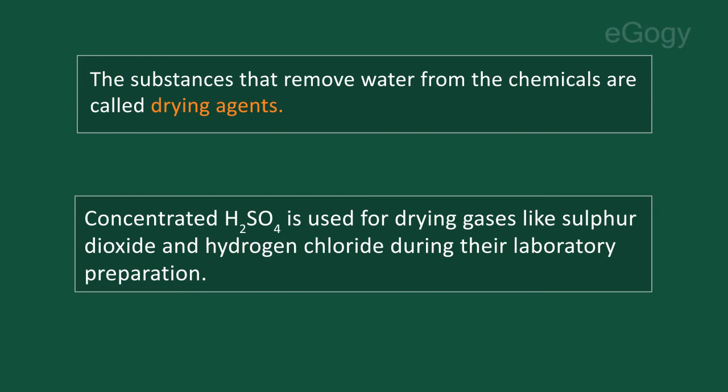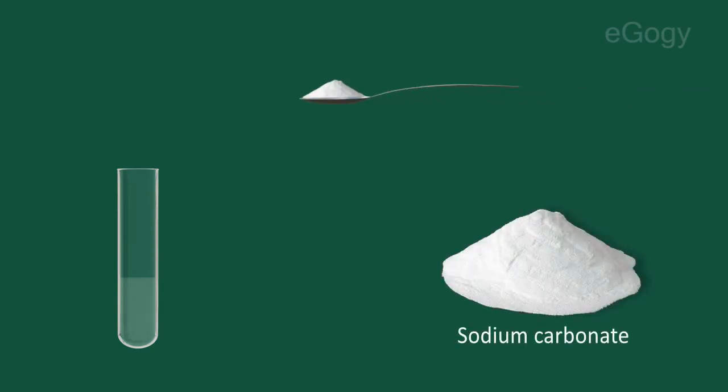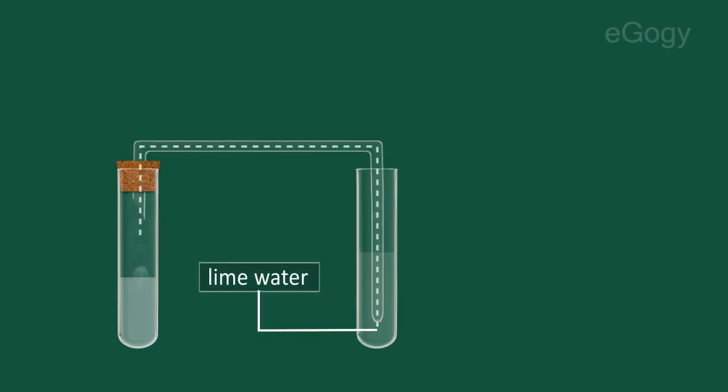Let us see the reaction of sulfuric acid with salts. Take some dilute sulfuric acid in a test tube, add a little sodium carbonate to it. We can see that the sulfuric acid combines with carbonate salts and forms carbon dioxide gas. Pass the gas produced through clear lime water taken in another test tube. Carbon dioxide passed into lime water gives a milky solution.